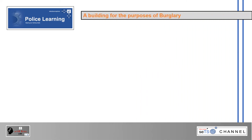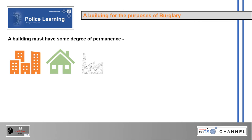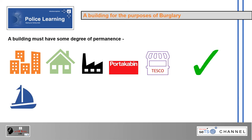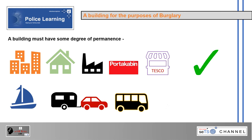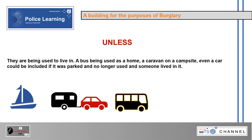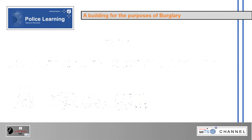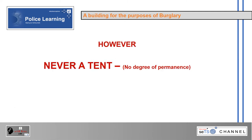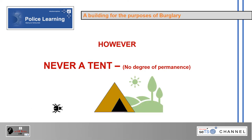A building, for the purposes of burglary, must have some degree of permanence — such as a block of flats, a house, a factory, a porter cabin, or a shop. A yacht, caravan, car, bus, and a tent are not considered buildings as they do not have some degree of permanence, unless they are being used to live in. A bus being used as a home, a caravan on a campsite, or even a car parked and no longer used where someone lives in it could be included. However, never a tent, as there is no degree of permanence.